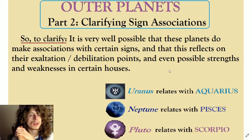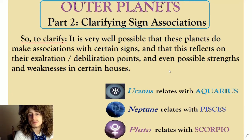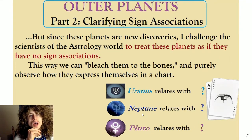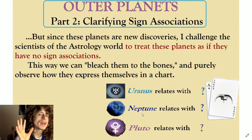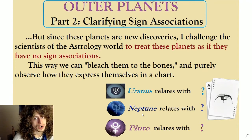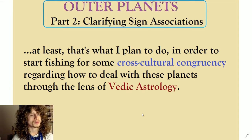Let's clarify. It's very well possible that the outer planets do make associations with certain signs, and that this reflects on their exaltation or debilitation points, and even possible strengths and weaknesses in certain houses. What I'm trying to do when I get to my whole unfolding of all this is treat them as if they have no sign associations. I challenge the scientists of the astrology world, at least for the first bit, to try to get at the real bones of how to interpret these planets. Let's treat them as if they have no sign associations, so we can bleach them to the bones and purely observe how they express themselves in a chart.